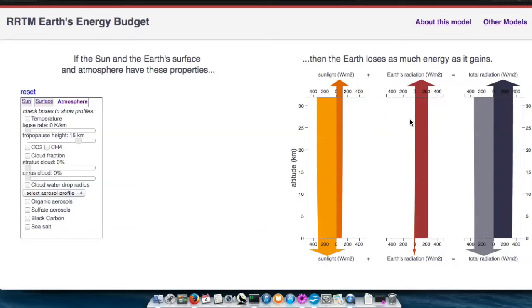The red arrows represent the longwave radiation given off by the Earth and its atmosphere, and the grey and purple arrows represent the total, which is just a sum of the previous two.